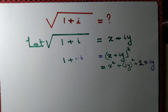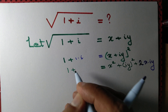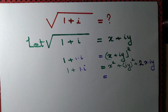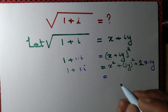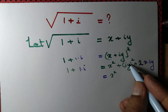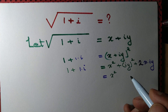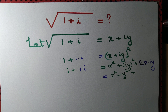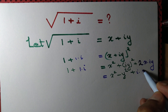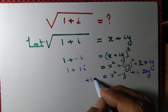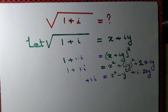So 1+i equals x² plus (iy)². Since i² = -1, we get x² - y² + i(2xy) = 1+i.